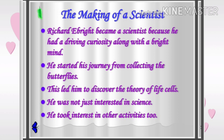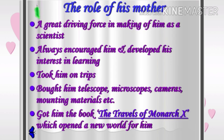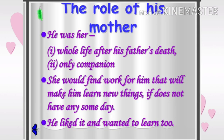Another important factor that helped Ebright achieve greatness was the role of his mother. She was a great driving force in making him a scientist. She always encouraged him and developed his interests in learning. She took him on trips, bought him telescopes, microscopes, cameras, mounting materials, and got him the book The Travels of Monarch X, which opened a new world for him. Moreover, Ebright was her whole life after his father's death. He was his mother's only companion. She would find work for him that would make him learn new things, because Ebright liked to work and wanted to learn more and more.